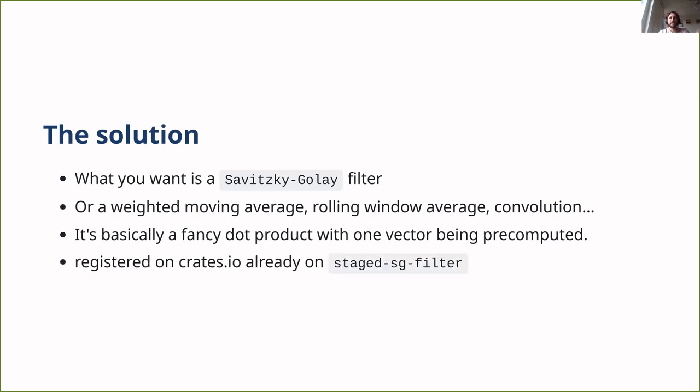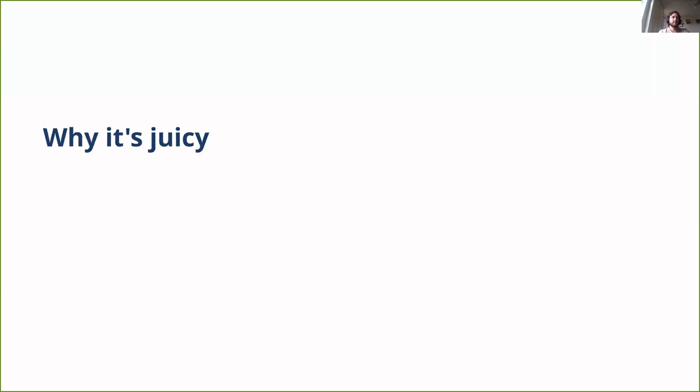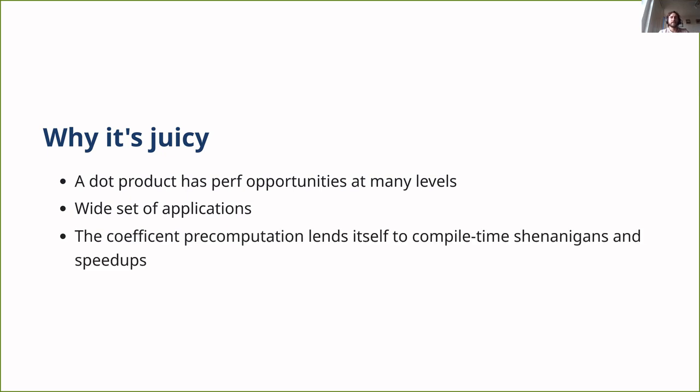The crate that I built is already registered on Crates.io. It's called stageSG filter. It's a more specific case, not as functional as the scipy version, but it does have some performance benefits. But I think it's more than that a really cool learning opportunity because it turns out dot products are so amenable to performance optimizations on a lot of levels. They let you sink your teeth in with a lot of really cool tools, and you see them everywhere. Also, I mentioned that we can pre-compute these coefficients, and that's interesting in and of itself because we'll see some techniques to get there.